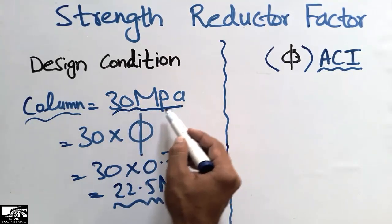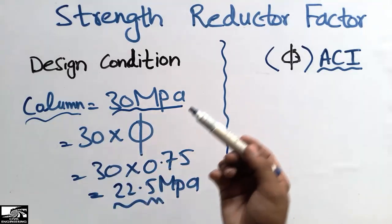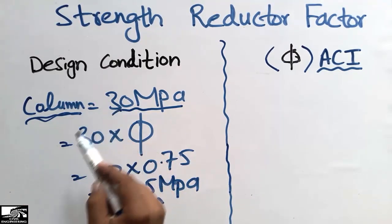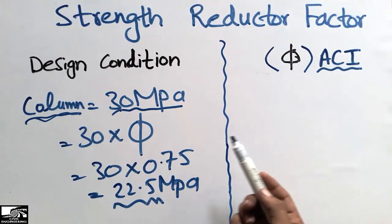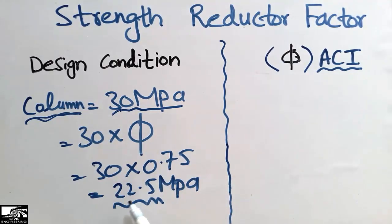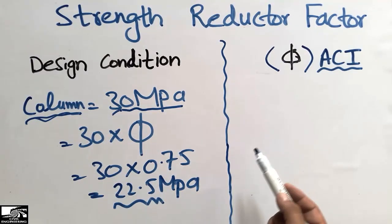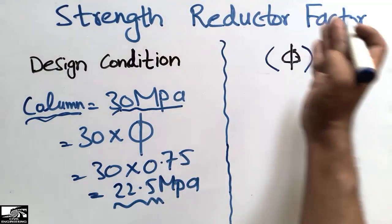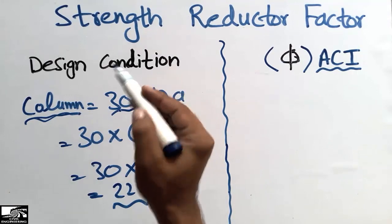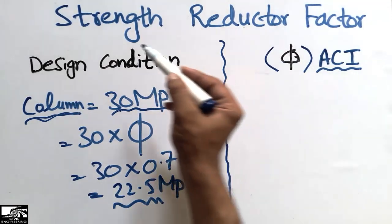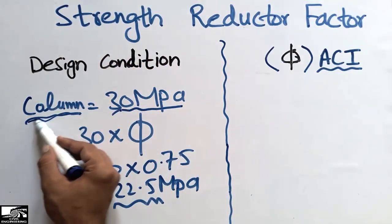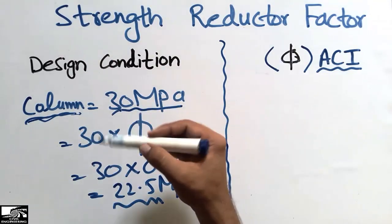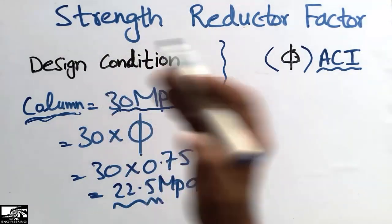We are assuming the actual strength of the concrete column is 30 MPa. When designing this column, we take 22.5 MPa into consideration because we apply the strength reduction factor to achieve the factor of safety. The design philosophy is that we must reduce the strength of any member by a reduction factor, and we must increase the load using load combinations.